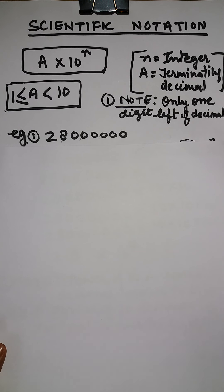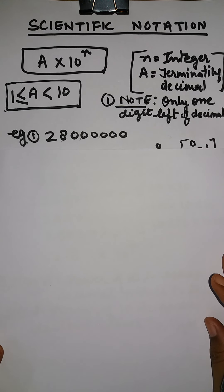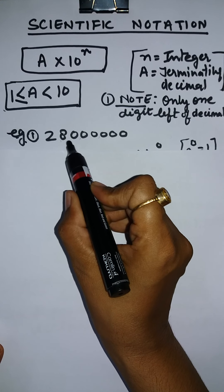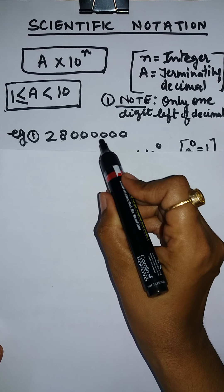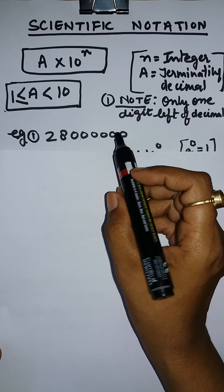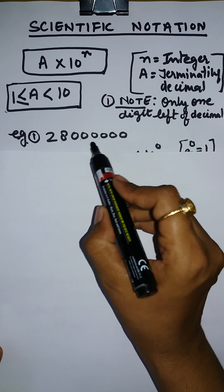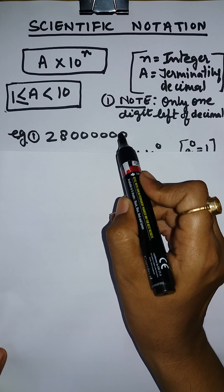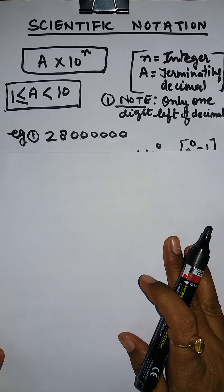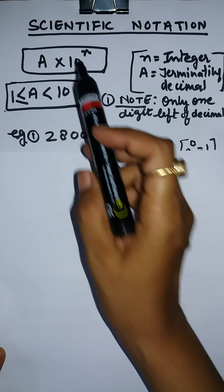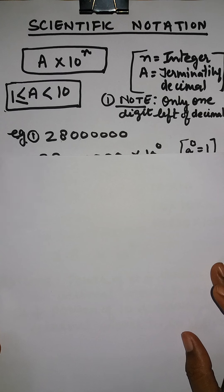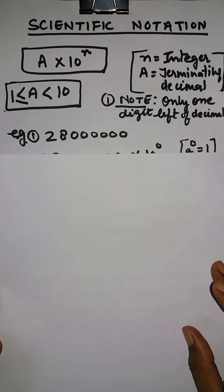Let us understand it through an example. This is 2, 8 followed by 6 zeros — it is 2 crore 80 lakhs. This is such a big number. Instead of writing in this form, we can write it in the scientific form also, which is called scientific notation or standard form of notation. Let us learn the concept.